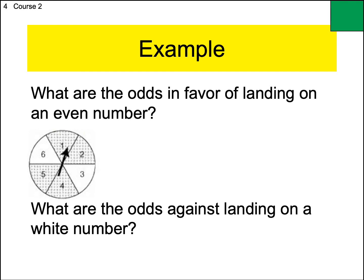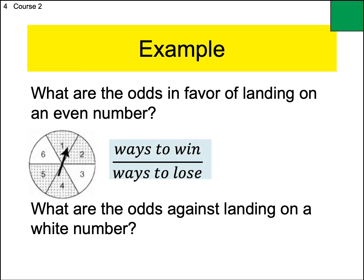Go ahead and do number four, then answer question two on the Google Forms. The first one: odds in favor of landing on an even number. Win over lose. Even numbers are two, four, six — there are three. Ways to lose would be odd numbers: one, three, five — also three. Three over three reduces to one over one, so one to one odds. You'll see this a lot in sports when teams are evenly matched — one to one odds means you're as likely to win as to lose, which equates to 50% probability.